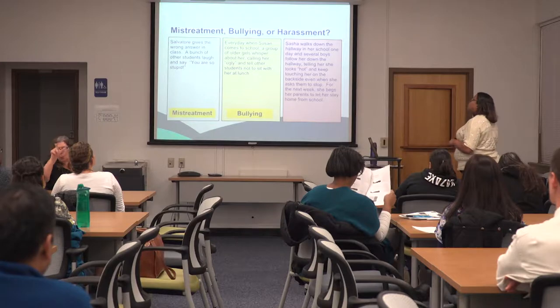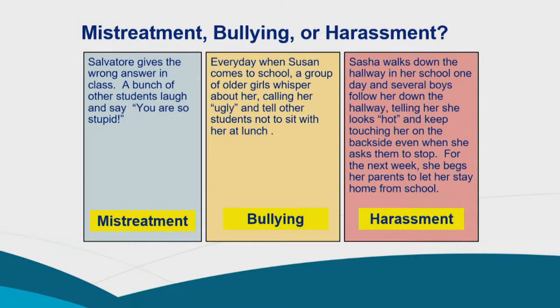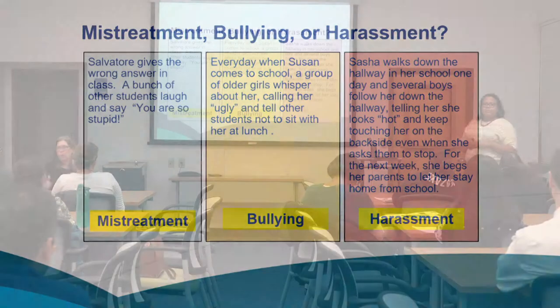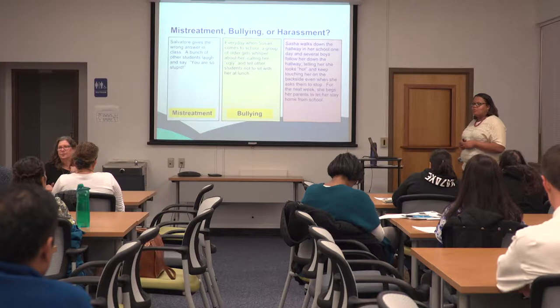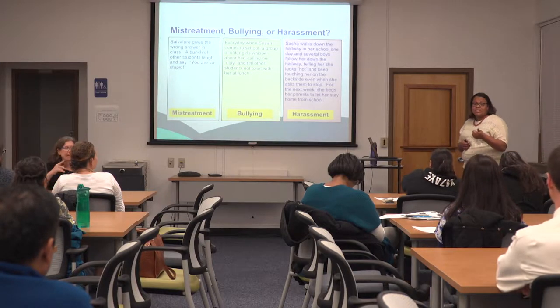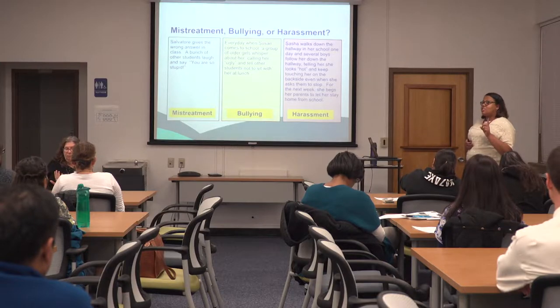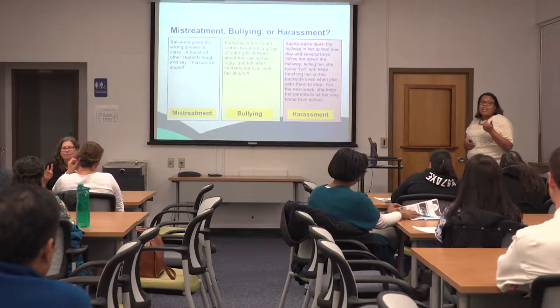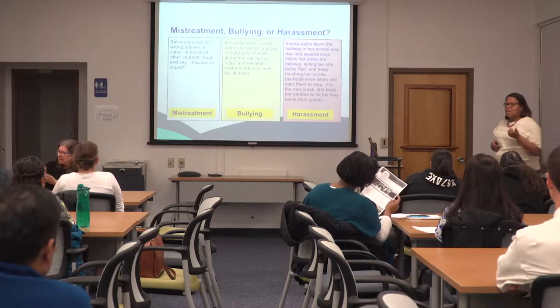Third scenario: Sasha walks down the hallway and several boys follow her, telling her she looks hot and touching her on the backside even when she asks them to stop. For the next week she begs her parents to let her stay home from school. That's harassment — there's the unwanted physical touch, verbal comments, and she explicitly asked them to stop.